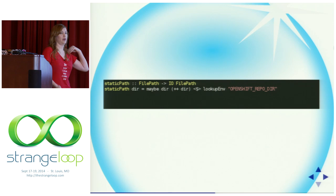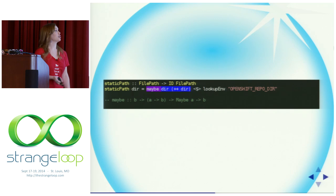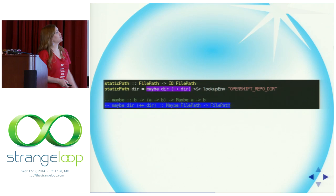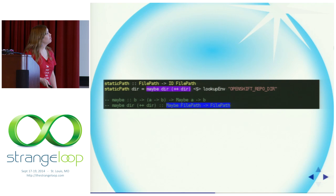Back to the Wubble example — maybe is a function that takes three arguments, but above we're only giving it two. The result of that expression is itself a function: one that takes a Maybe FilePath and gives us back a FilePath. So that's currying in practice — partially applying maybe to get a specialized function.